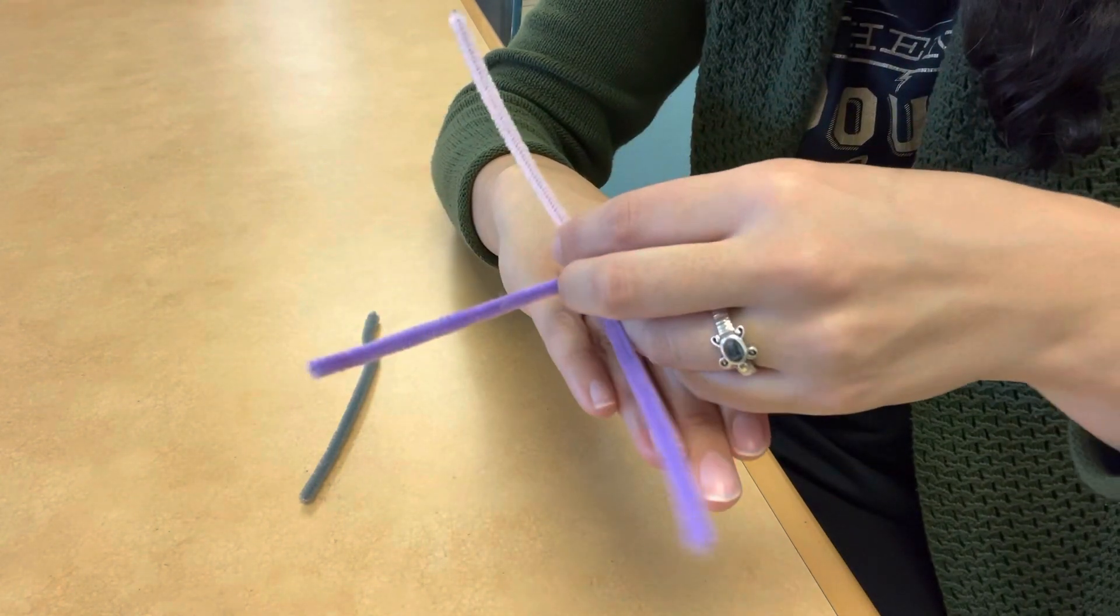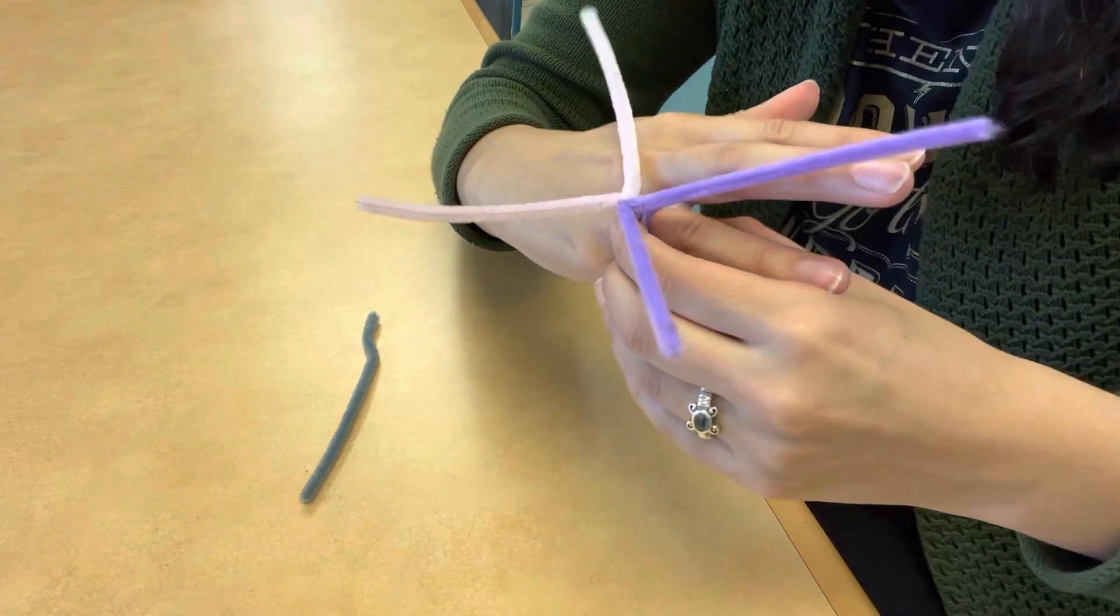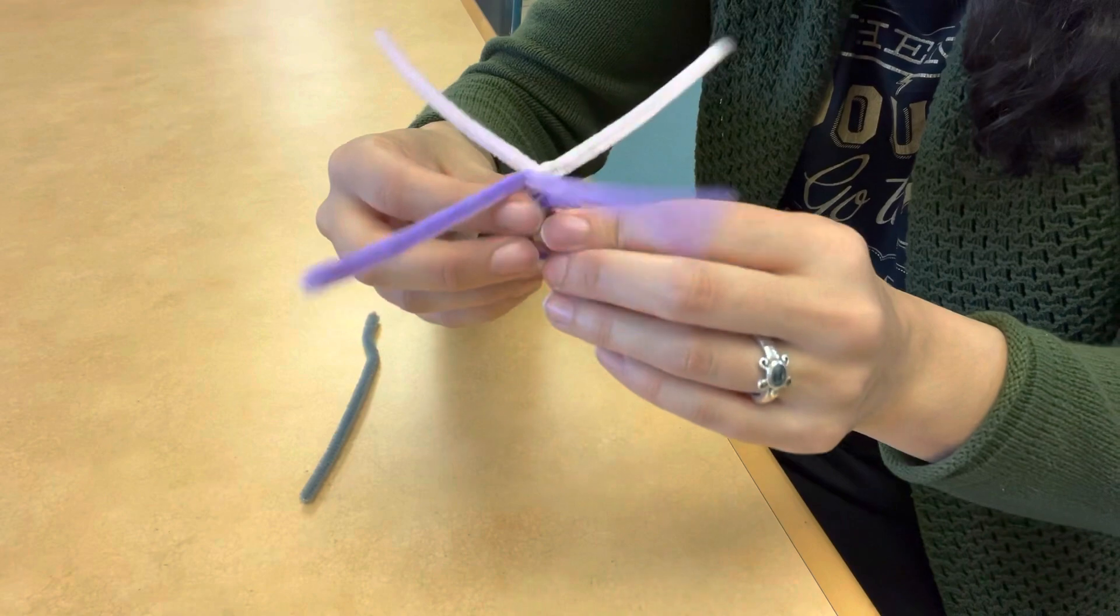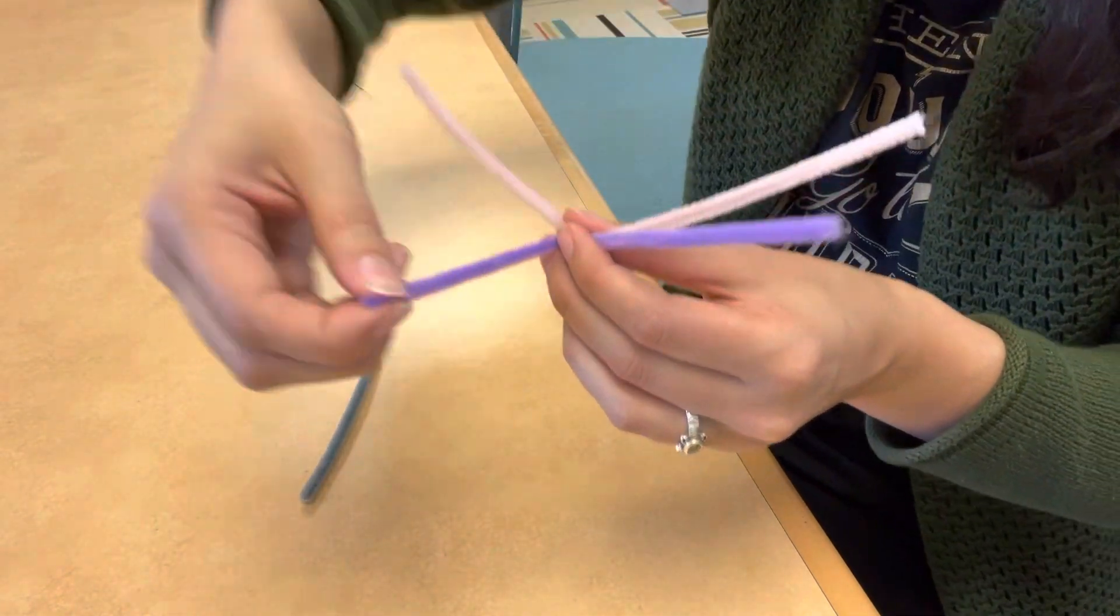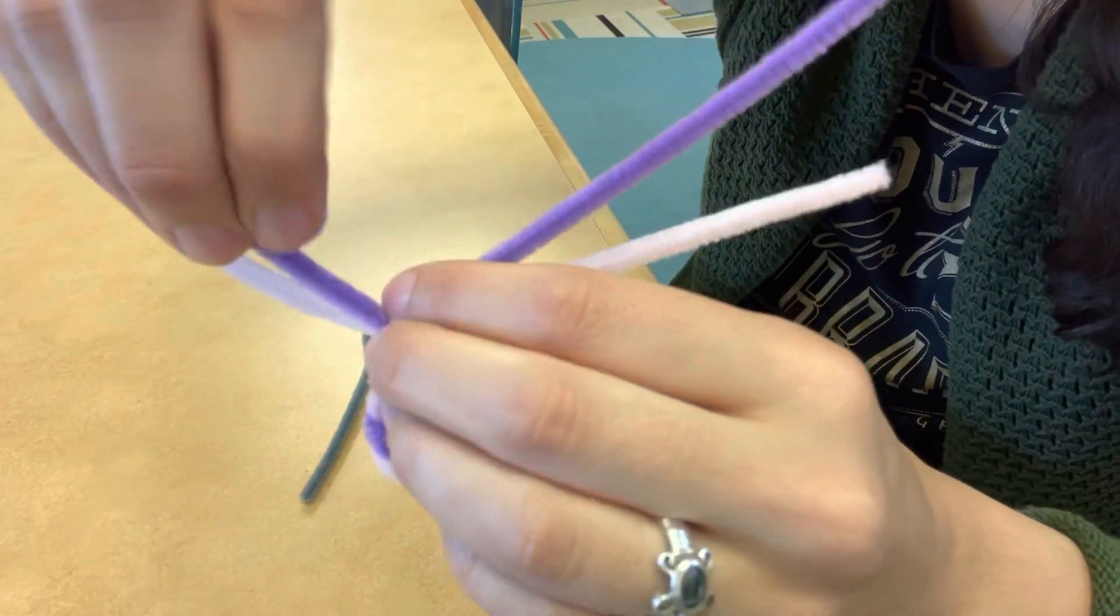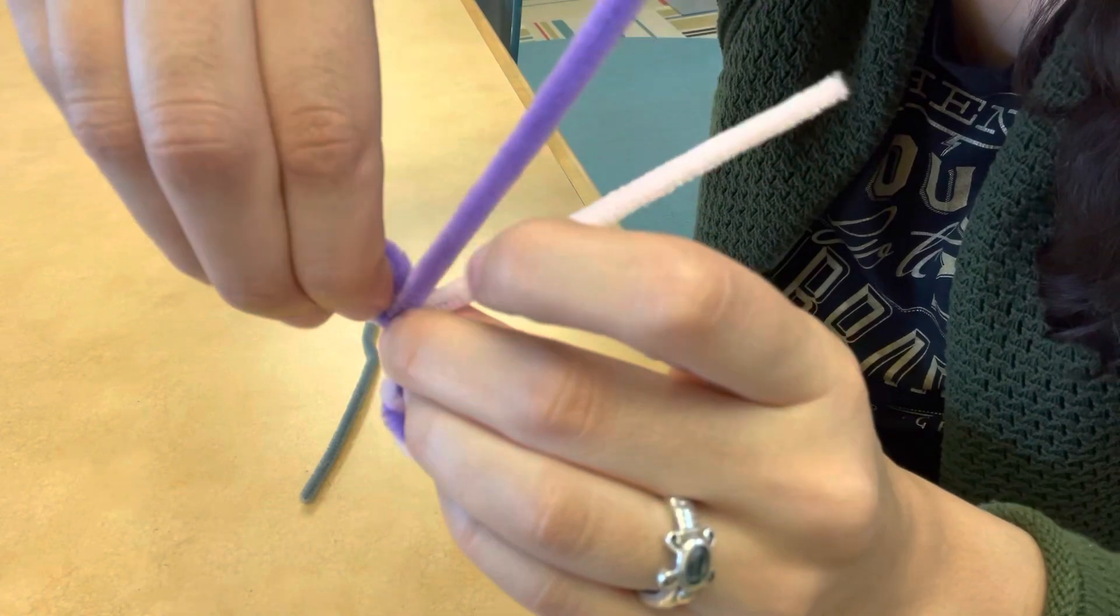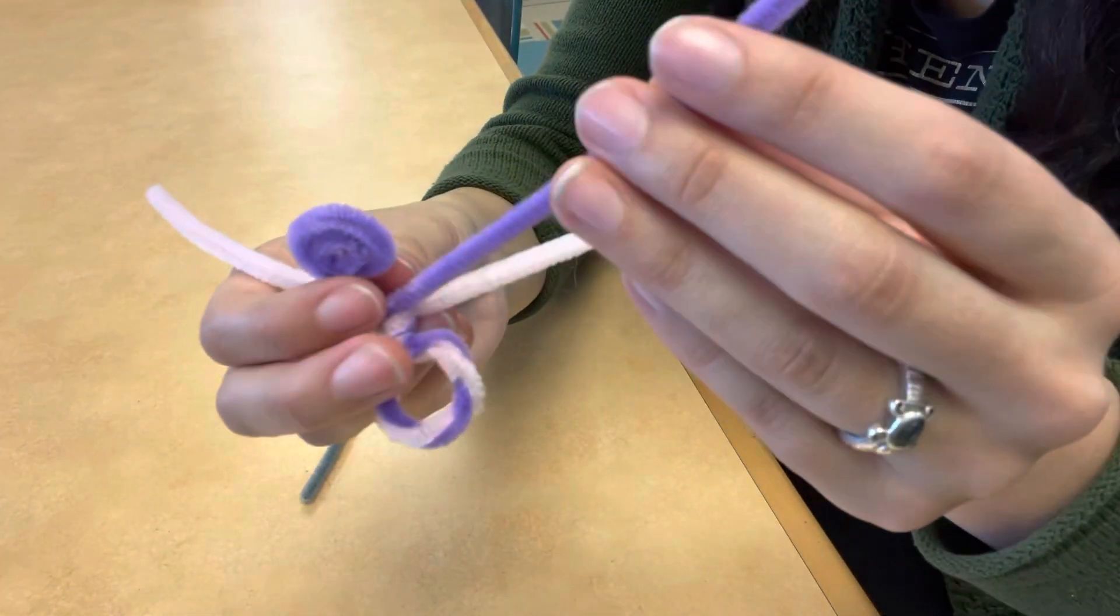Now you're going to take the four ends that are sticking out and arrange them. If any are too long, you can use your scissors to trim them. Then you're going to take the ends and curl them just like this, into a nice spiral towards the middle. You're going to do the same for all four sides.